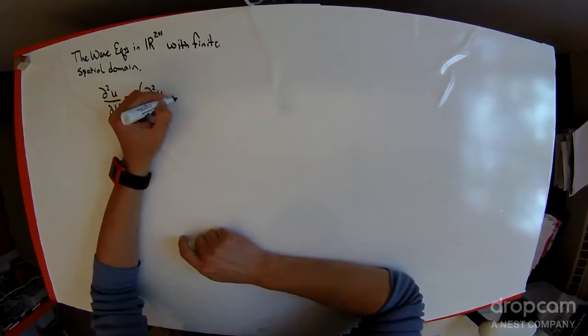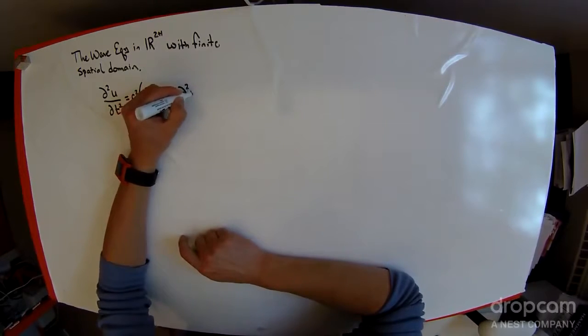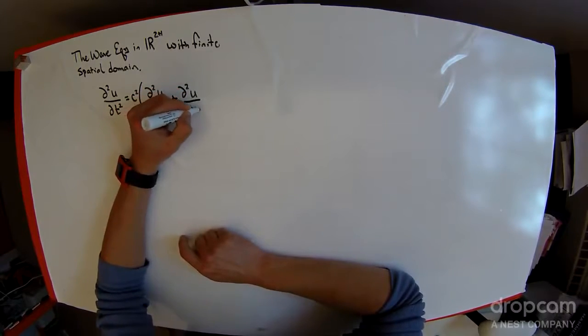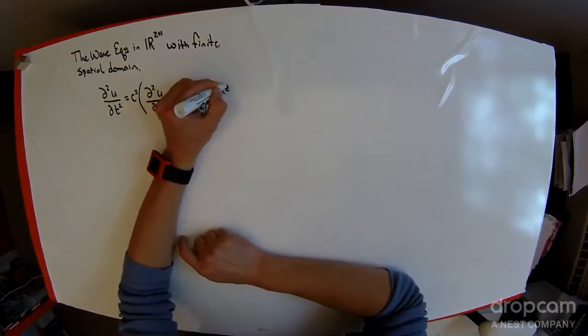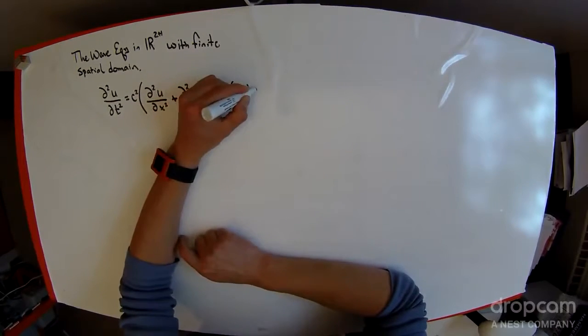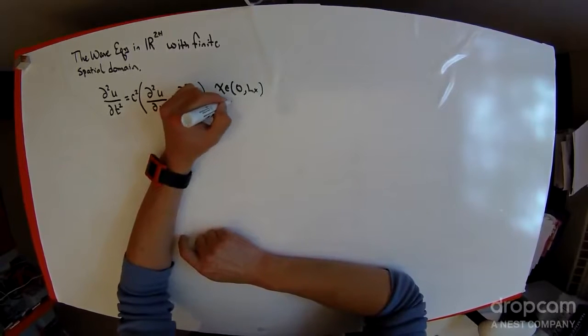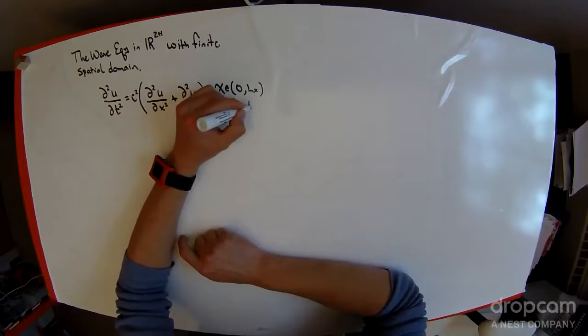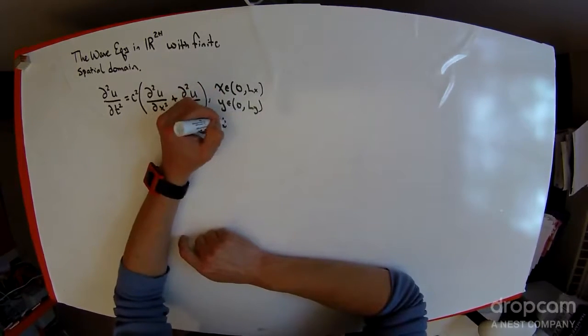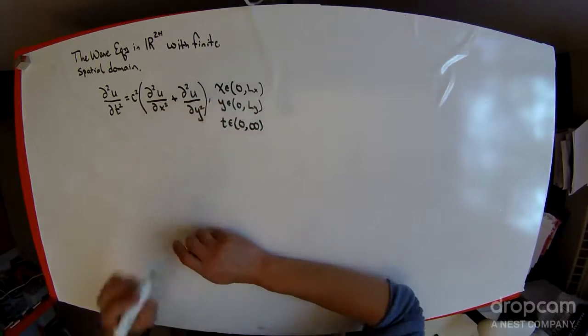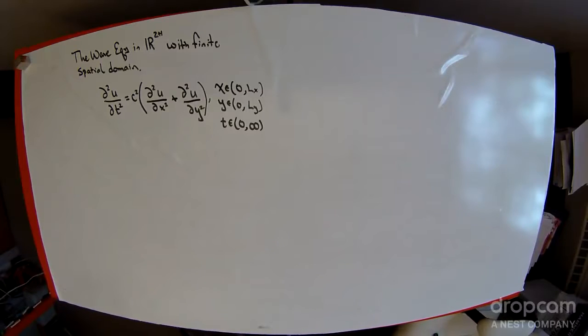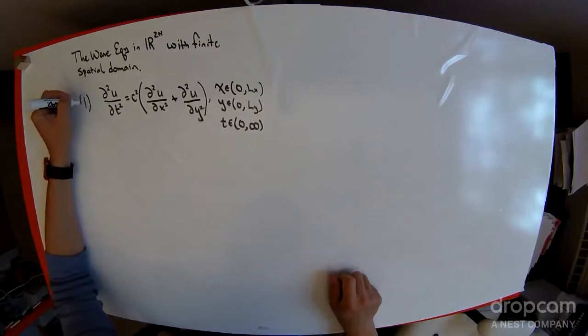But what we're going to do is we're going to introduce another spatial dimension, a y dimension. So that means that x could be from 0 to L_x, and y could be from 0 to L_y, and t could go from 0 to infinity. We'll call this equation 1.